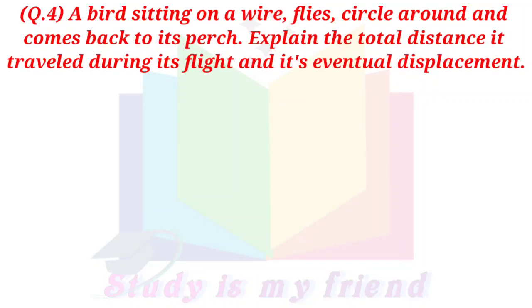Question 4. A bird sitting on a wire, flies, circles around and comes back to its perch. Explain the total distance it traversed during its flight and its eventual displacement.